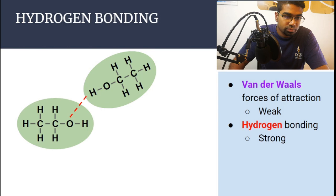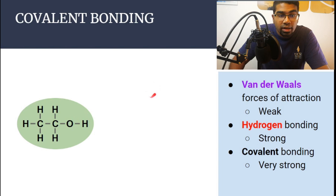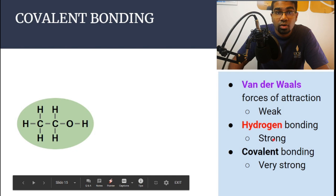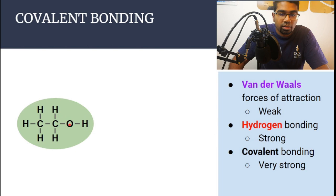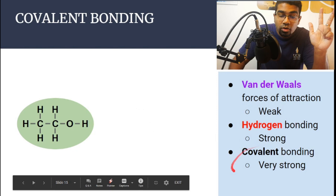Going back to basics, there also exists covalent bonding inside the molecule — an intramolecular force of attraction between the atoms within one molecule, not between one ethanol molecule and another. Covalent bonding is very strong, about 10 times stronger than hydrogen bonding. So we have three types of bonds: Van der Waals forces of attraction (very weak, intermolecular), hydrogen bonding (strong, intermolecular), and covalent bonding (very, very strong, intramolecular — within one molecule).